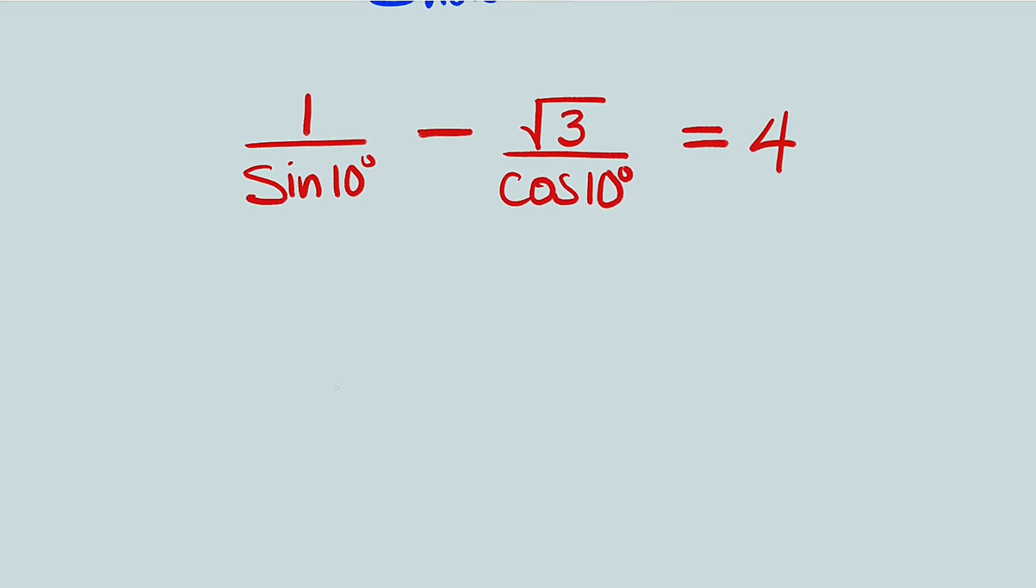I think we can simplify it as this. Cosine of 10 degrees multiplied by 1 is cosine of 10 degrees, so we write it here. Minus sine of 10 degrees multiplied by root 3 is root 3 multiplied by sine of 10 degrees. Then we divide by the product of these two ratios, which is sine of 10 degrees multiplied by cosine of 10 degrees. So this is the simplified form of the left-hand side.